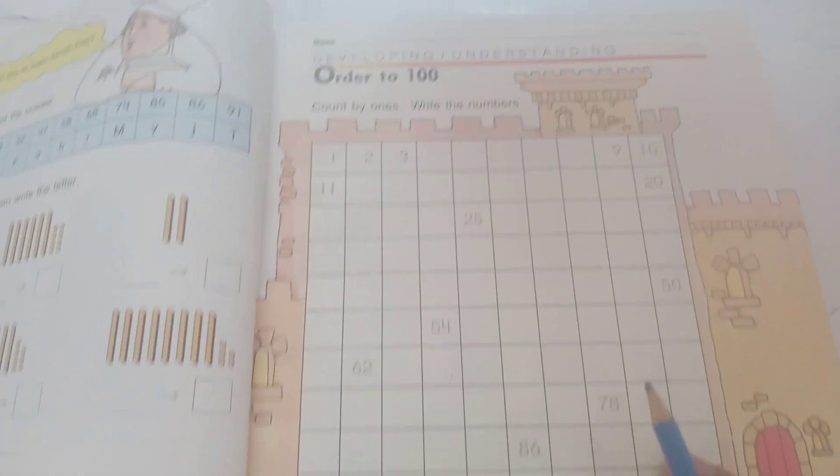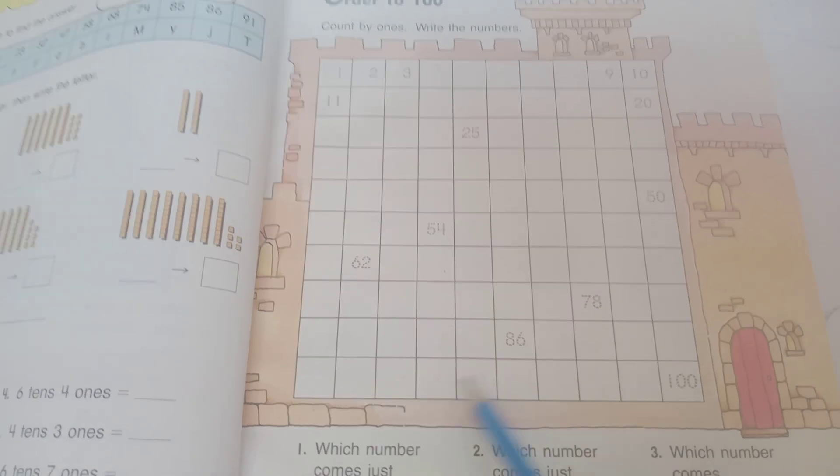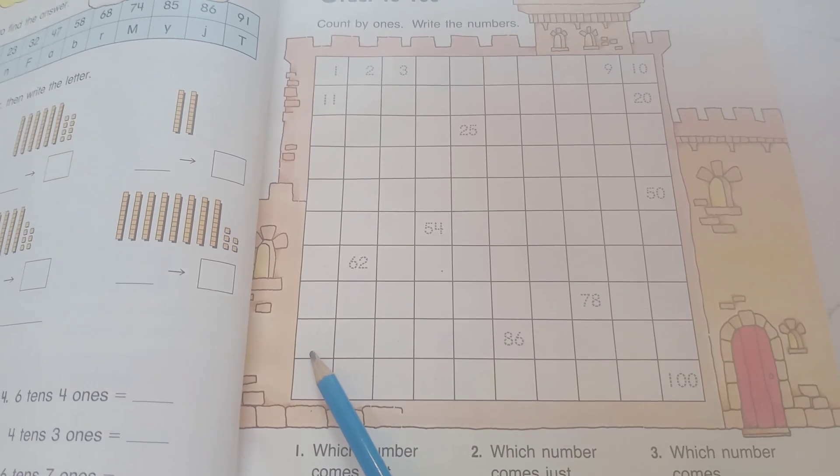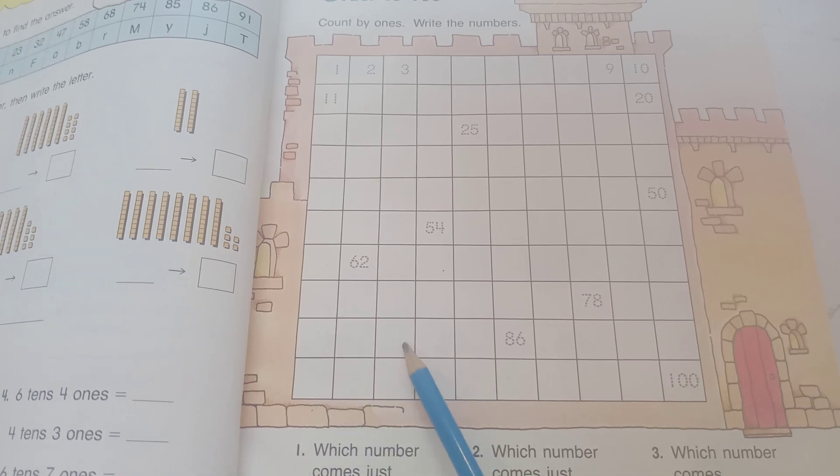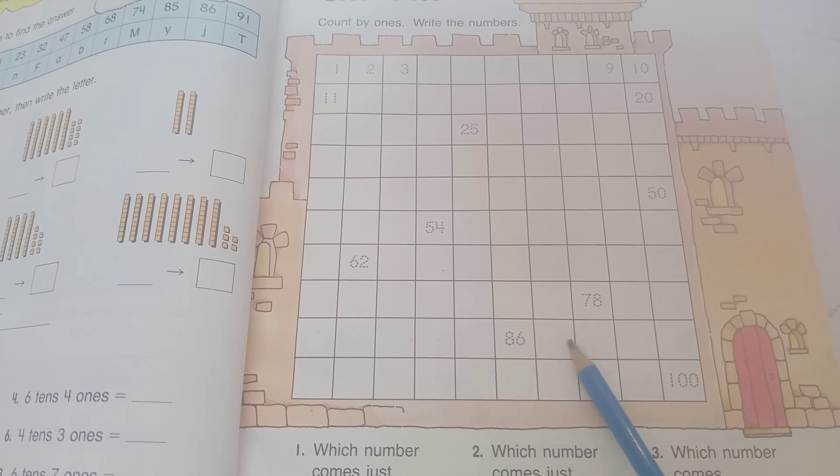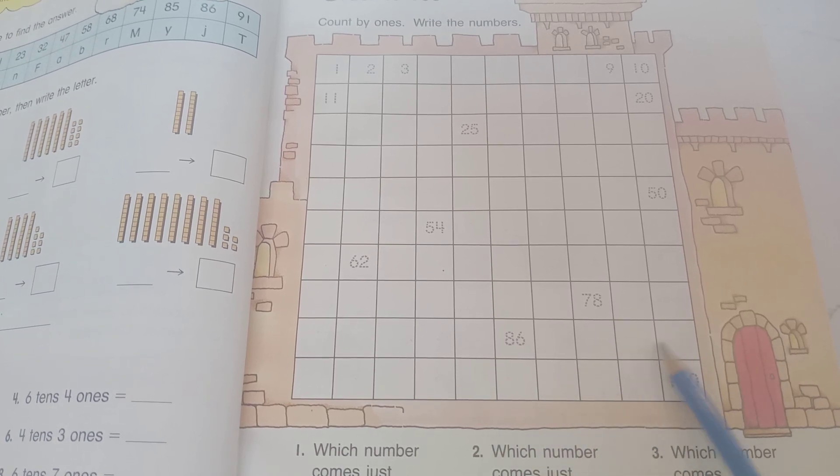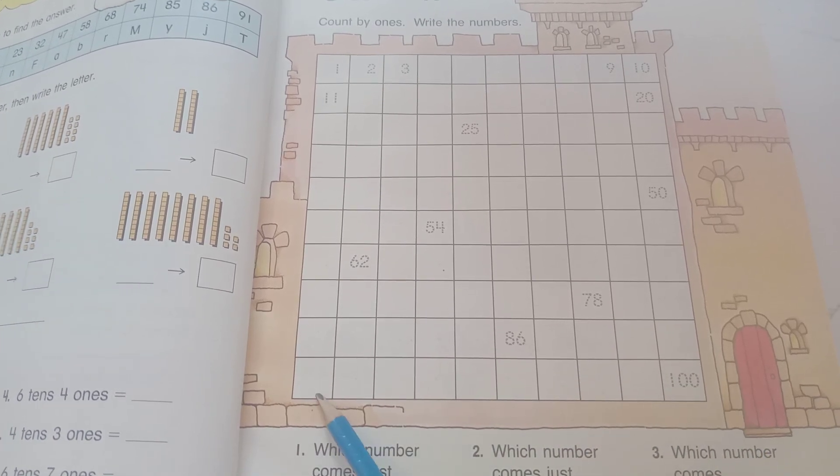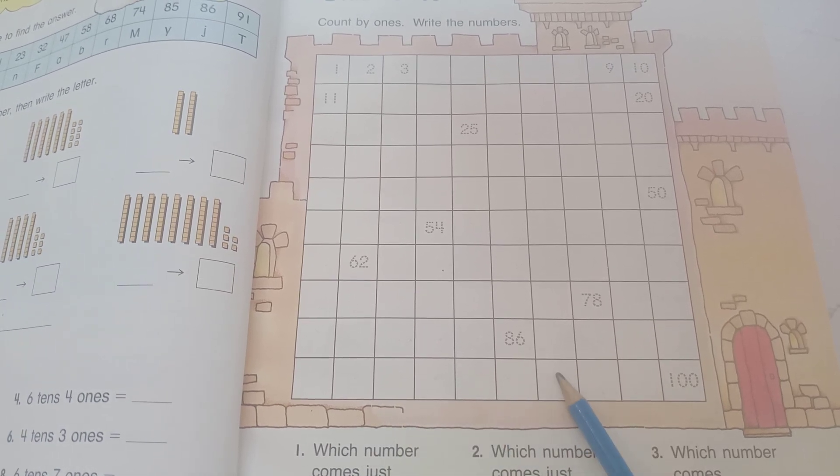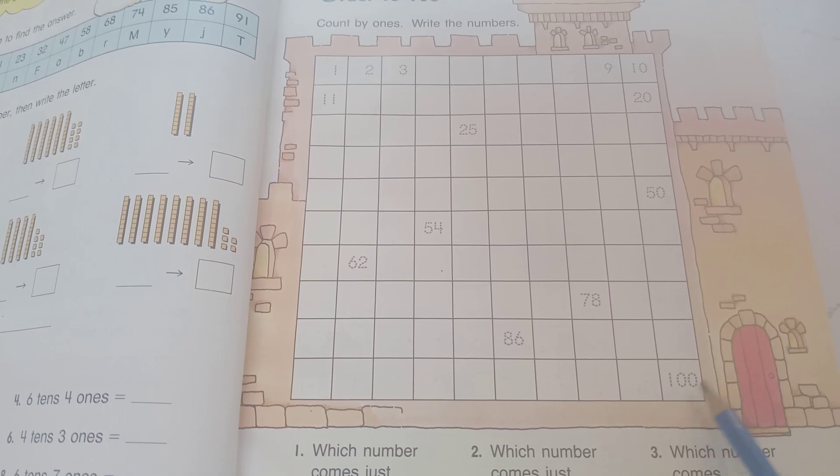And so now, okay, let's review again: 80, 81, 82, 83, 84, 85, 86, 87, 88, 89, 90, 91, 92, 93, 94, 95, 96, 97, 98, 99, 100. Okay.